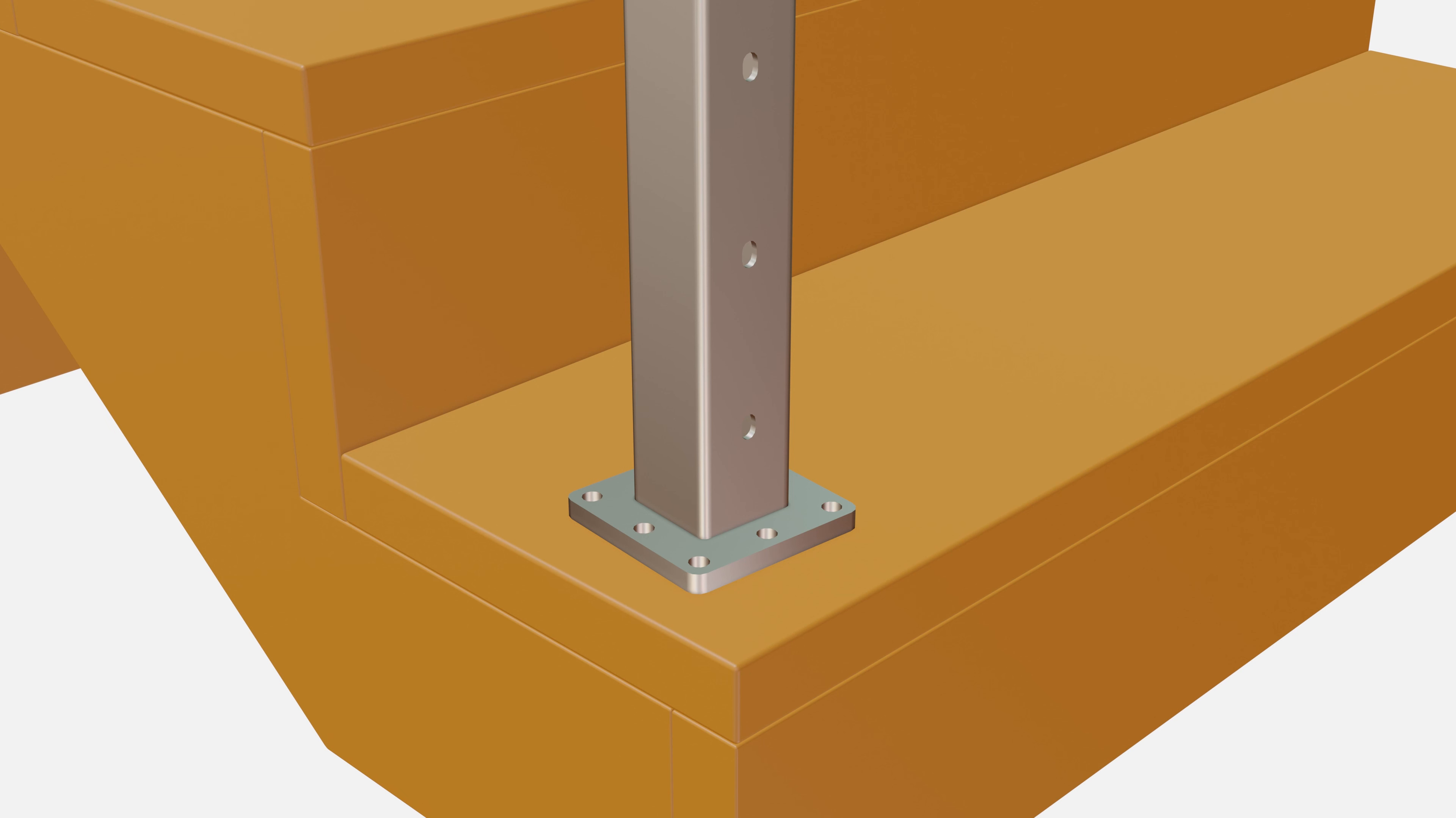To set your post correctly, you can use a speed square to equally set each post off the front of the tread and the edge of the tread. It may be helpful to use a pencil and mark a small line where the edges of the post mounting plate are sitting.